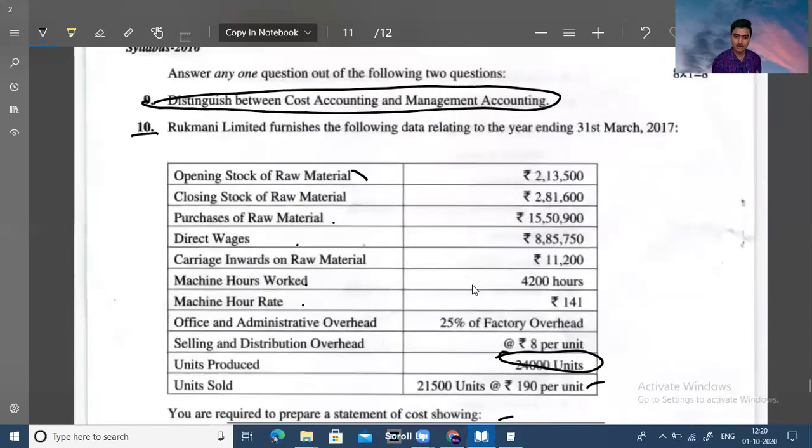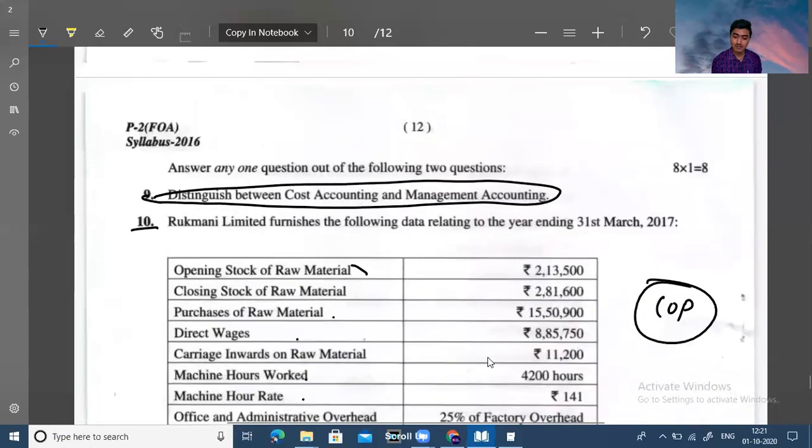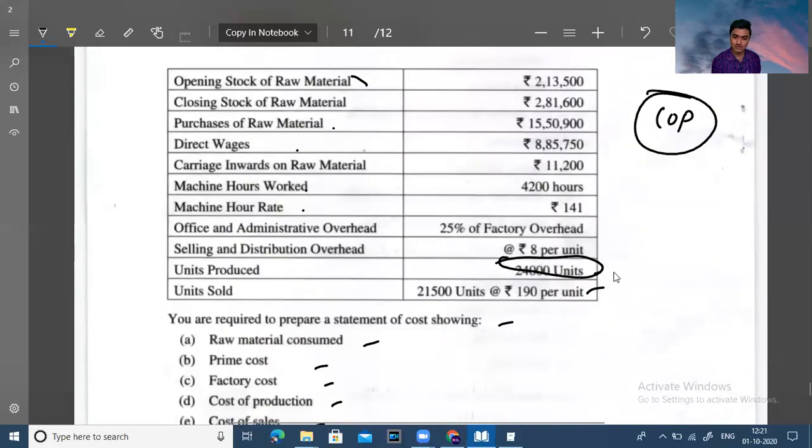You have to do it. First, you have to make a cost sheet. Where did you make a cost sheet? Cost of production. Because I have told you that the quantity produced is 24,000 and the quantity sold is 21,500. Then the profit is for 21,500 quantity and the cost is for 21,500. So first, what is the first step? To calculate the cost of production.